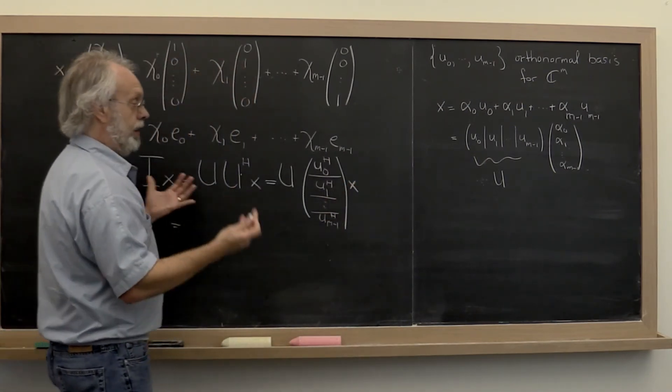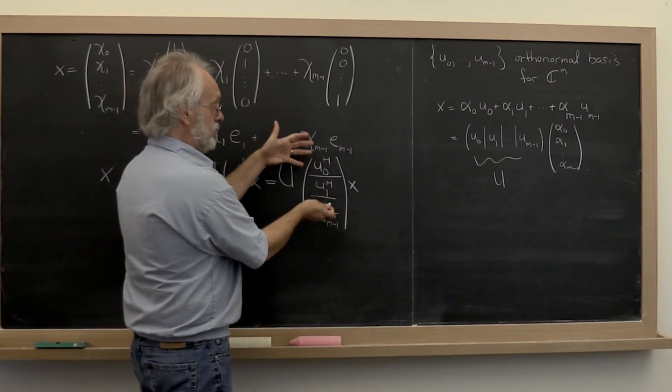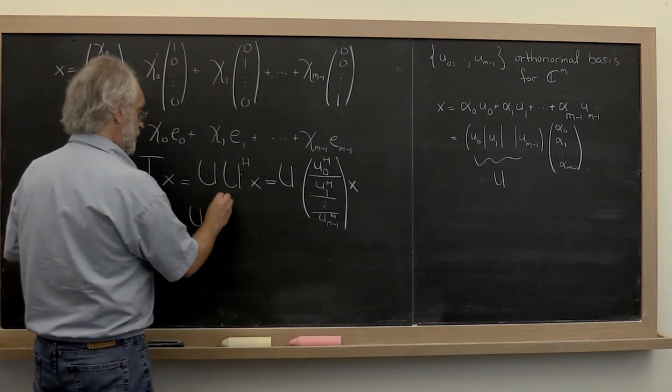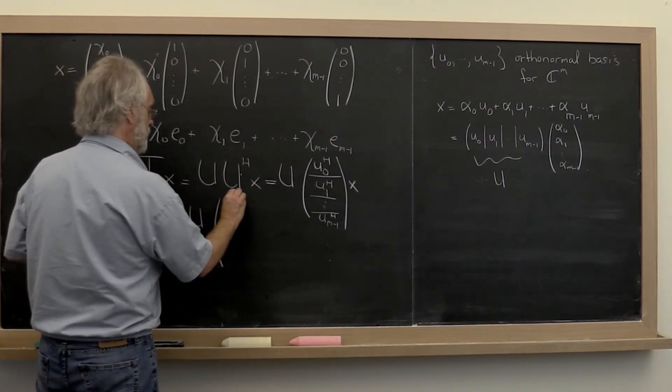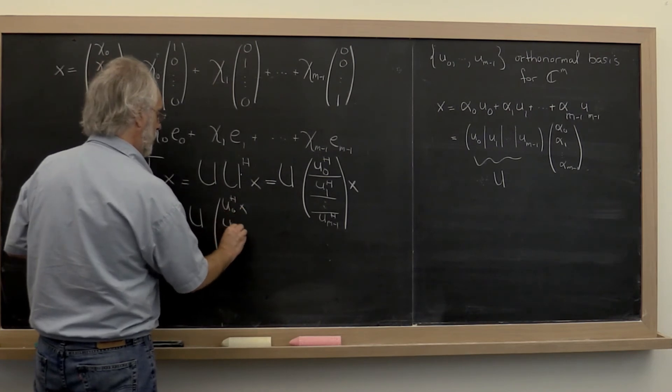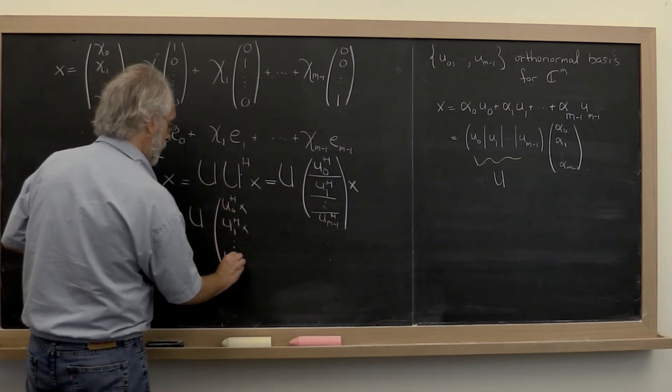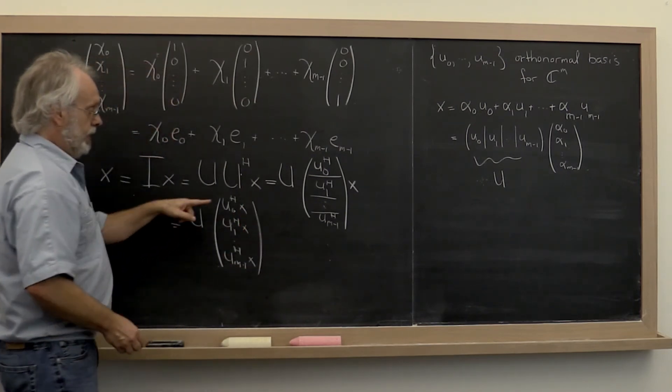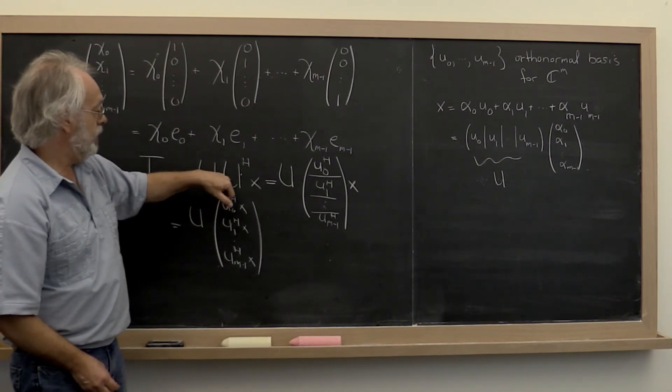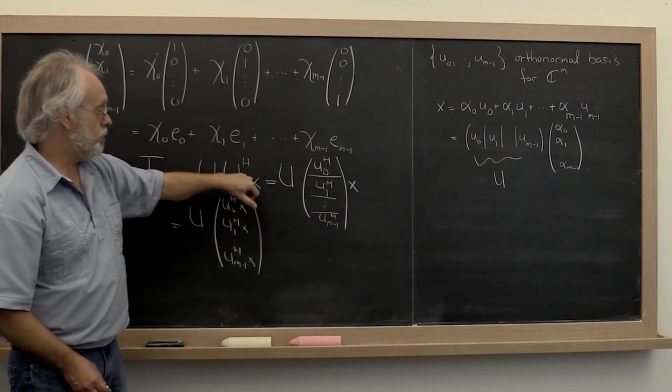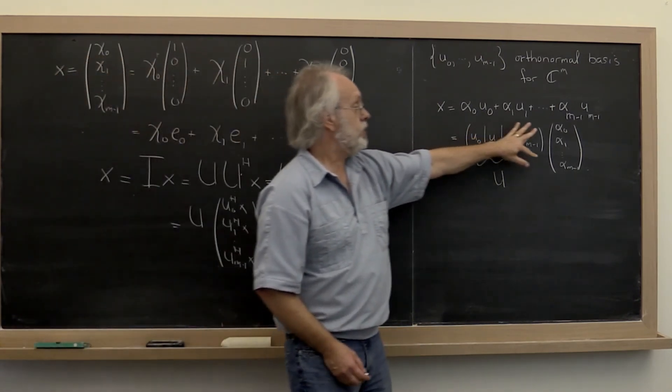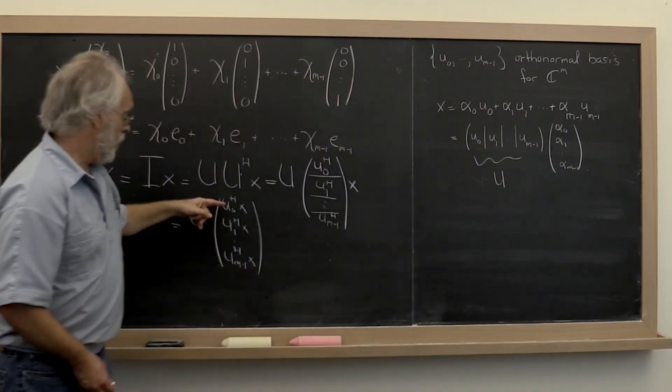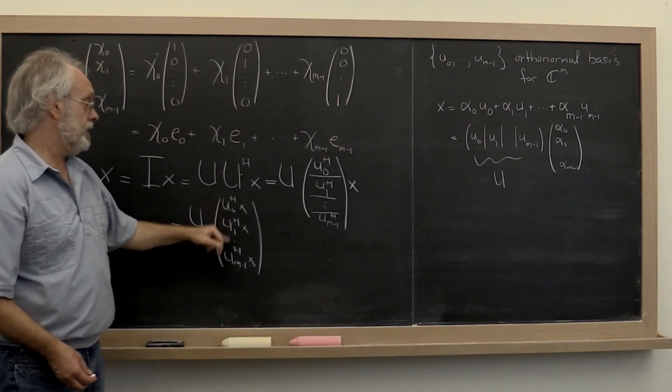And that we know because we know how to multiply partitioned matrices times a vector. That's just equal to U times the vector u0 Hermitian x, u1 Hermitian x and so forth. And that tells us that you can either take U and multiply its Hermitian transpose times x to get these coefficients that allow you to view in terms of this new basis, or you can form that vector more explicitly as follows.